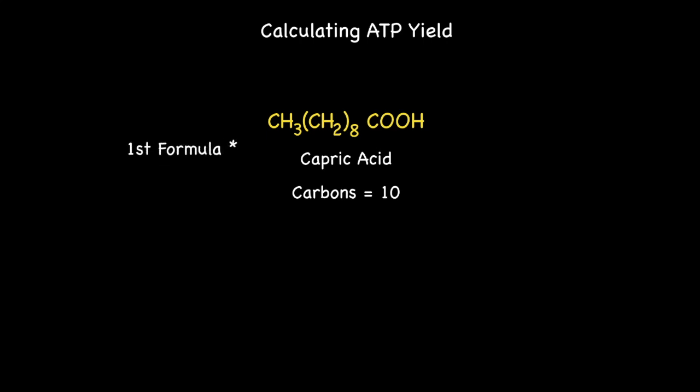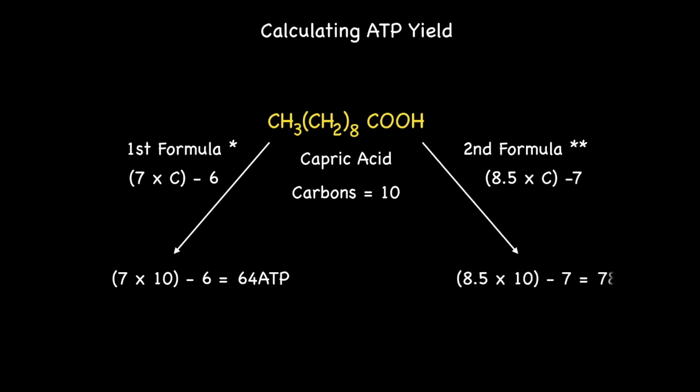Using the first formula would generate 7 times 10 minus 6 which equals 64 ATPs while the second formula would generate 8.5 multiplied by 10 minus 7 which would give you 78 ATPs.